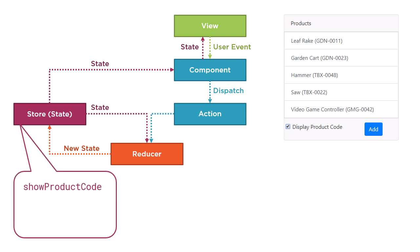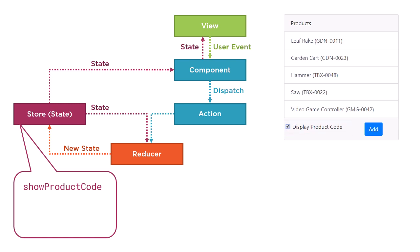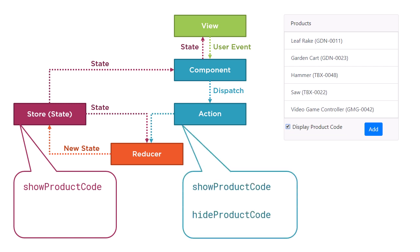With our first bit of state defined, let's analyze the actions needed to modify that state. These actions are the events in the application, defined as verb and noun phrases. For our showProductCode state, we have two state changes: we set the value to true when the user checks the box, and false when the user unchecks the box. We could define two actions — one to show the product code, and one to hide the product code.